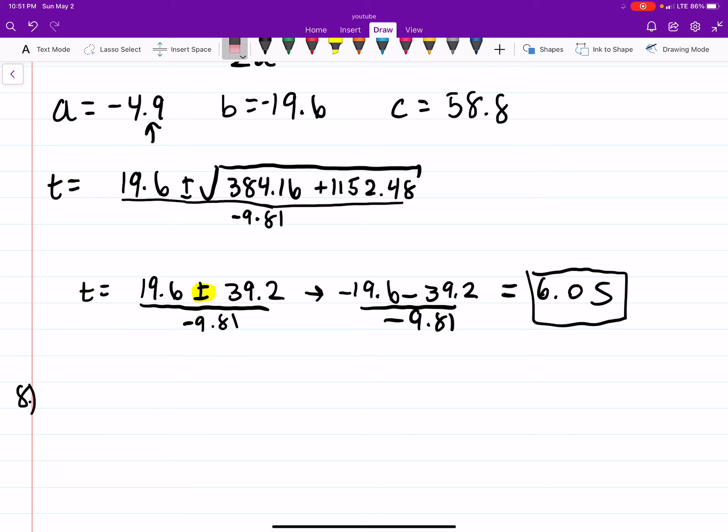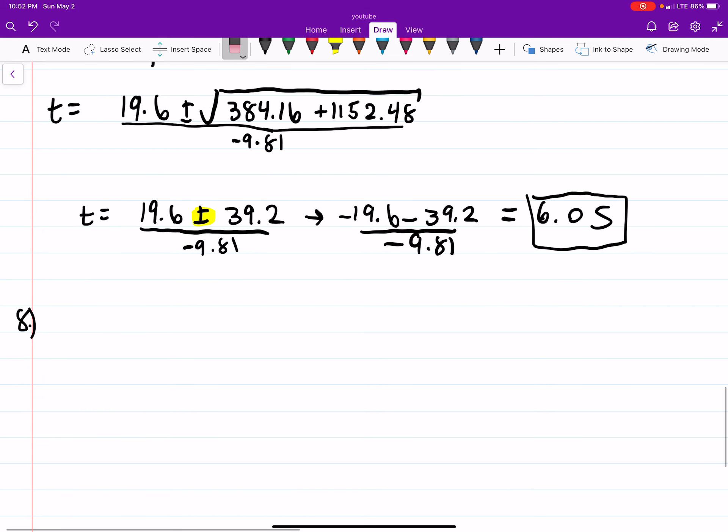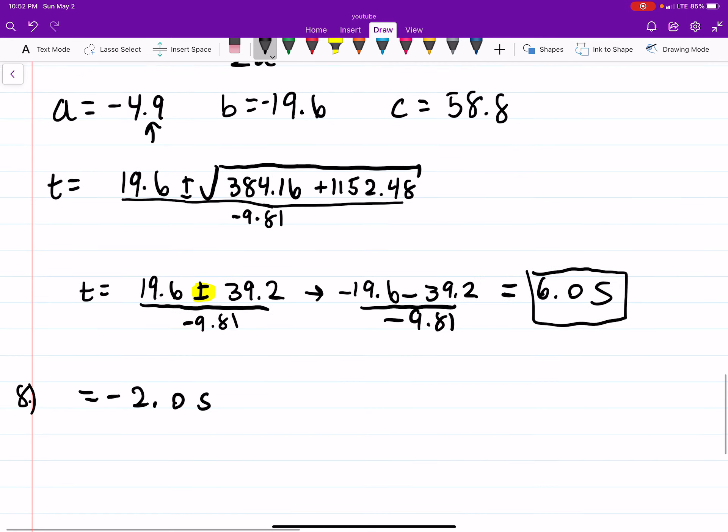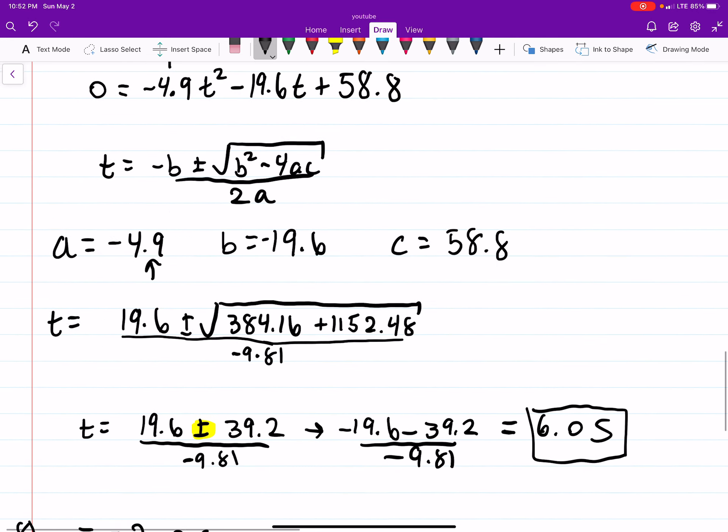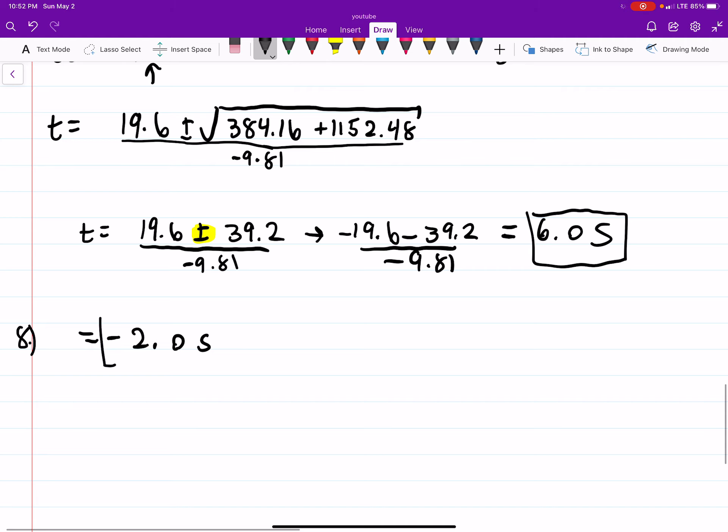So essentially, all you're doing is having a sign change. One sign change. And if you do that, you'll get negative 19.96 minus 39.2, you still want a negative, divided by negative 9.81, and that's equal to basically 2.0 seconds. This makes sense. You'd expect if you threw it straight down, it would hit the ground faster than if you threw it up and then it came back down.